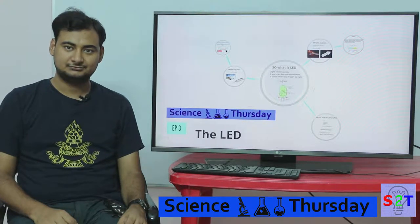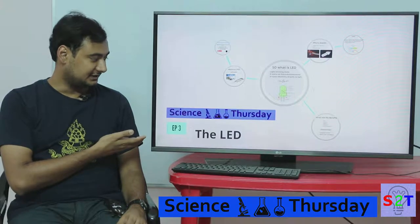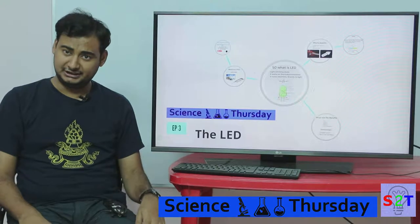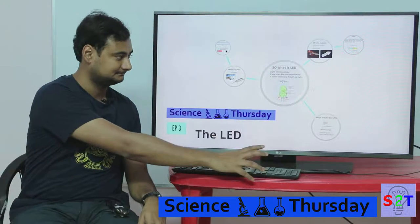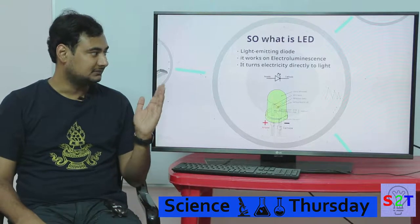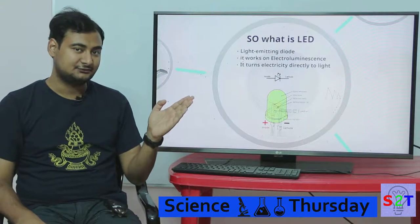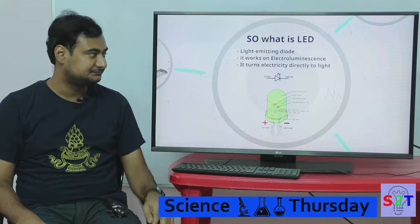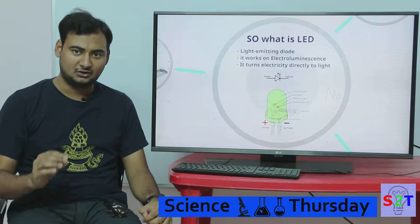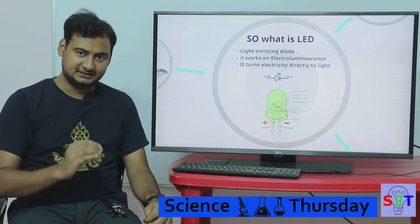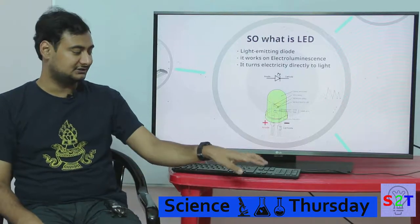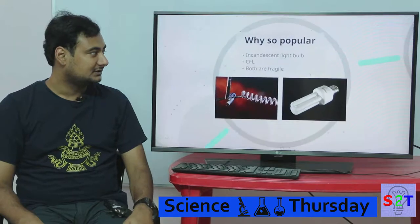Hello YouTube viewers, welcome to my show Science Thursday. Today is episode number three and we're going to take a look into the LED. The question comes to mind: what is an LED? In simplest terms, LED stands for light emitting diode. How does it work? Very simply, it's an electroluminescent device — all that means is it takes electricity and directly turns it into light. There is no conversion.